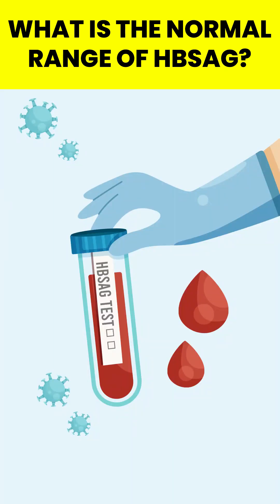HBSAG is an antigen found on the surface of hepatitis B virus. HBSAG may be detected in the blood any time after one.